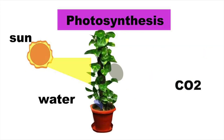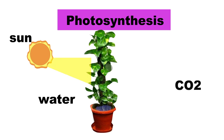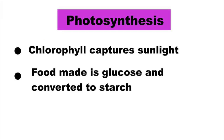Photosynthesis is the process by which food is made by the leaves. Leaves use carbon dioxide, water and sunlight to make glucose. The chlorophyll pigment, the green pigment inside the leaf, captures the sunlight and helps in photosynthesis. The food made by the leaf is initially glucose, which is then converted into starch.